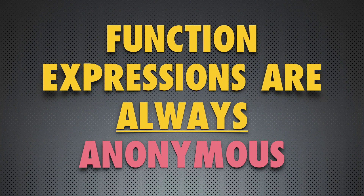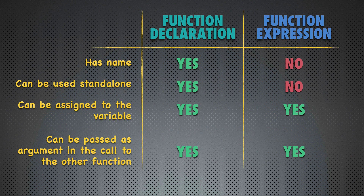Any function expression doesn't have any name, meaning each function expression is an anonymous function expression. Now let's look at a comparison table showing the difference in usage. Function declaration has a name; function expression doesn't — it is always anonymous. Function declaration can be used stand-alone, as we have seen in previous examples where we declared and then called a function. Function expression cannot be used stand-alone.